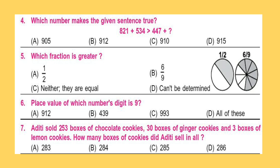Question 7. Aditi sold 253 boxes of chocolate cookies, 30 boxes of ginger cookies and 3 boxes of lemon cookies. How many boxes of cookies did Aditi sell in all?